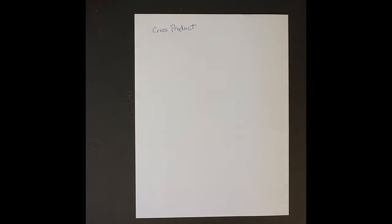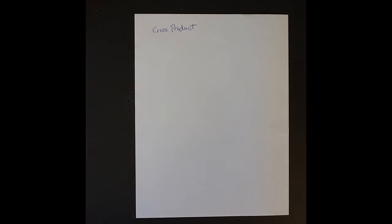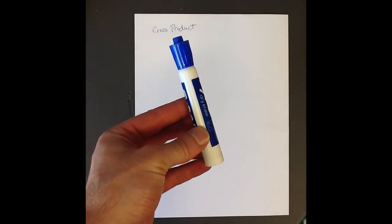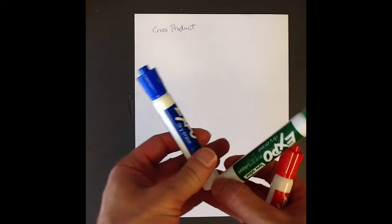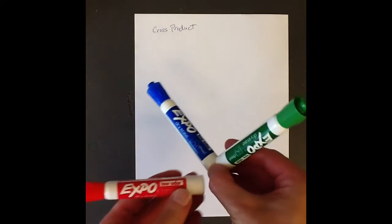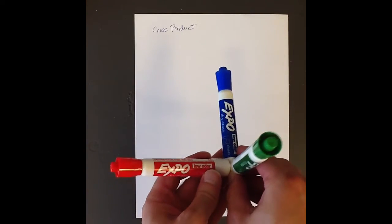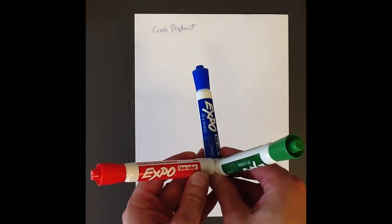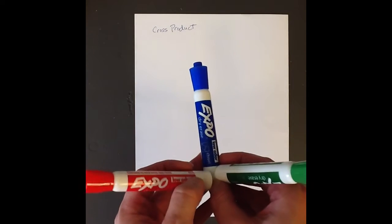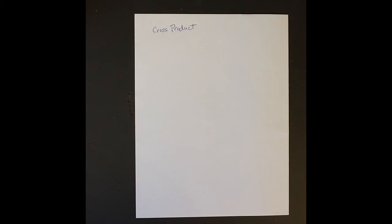In this video, we'll talk about the cross product. The cross product is a way to get a vector that's perpendicular to two other vectors. As an example, we'll have a blue vector and a green vector, and we want a vector that's perpendicular to both of these vectors — this red vector would be perpendicular to both the blue and the green vectors. Unlike the dot product, this formula only applies to 3D vectors.